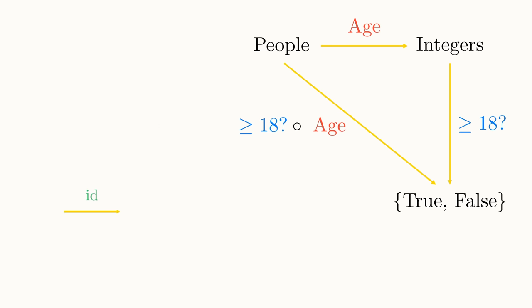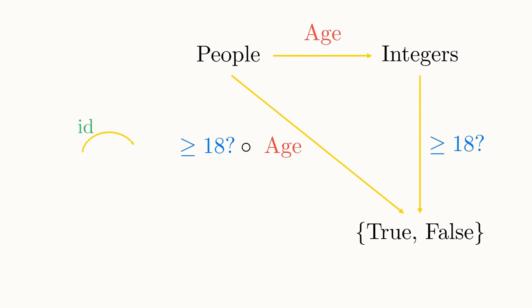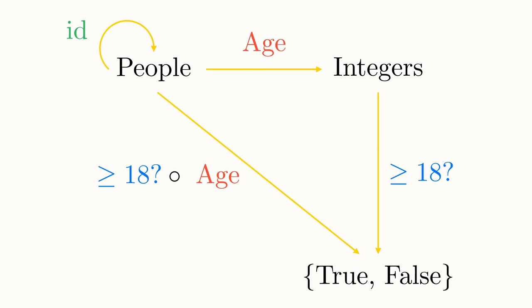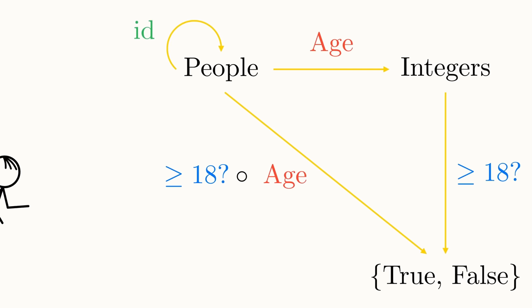This function turns out to be incredibly useful, so we'll add it to our diagram. An identity function exists for every set, simply defined as mapping each element in the set to itself, but I'll only draw it on the set of people to avoid cluttering up the diagram. So this is composition in set theory.